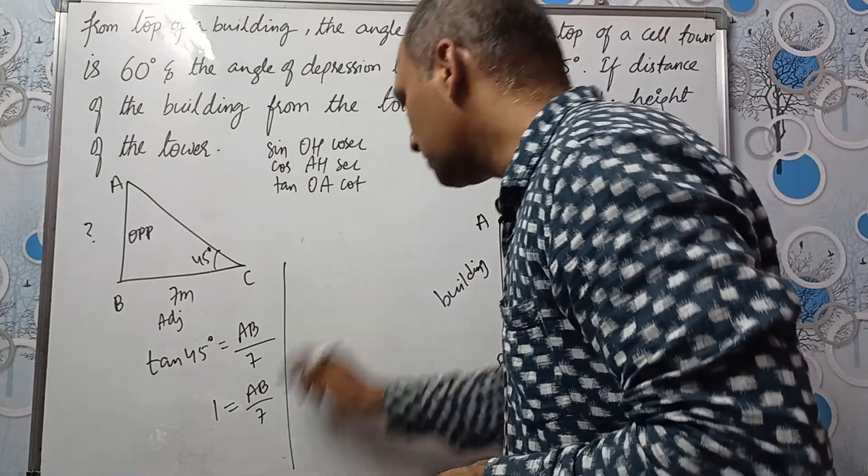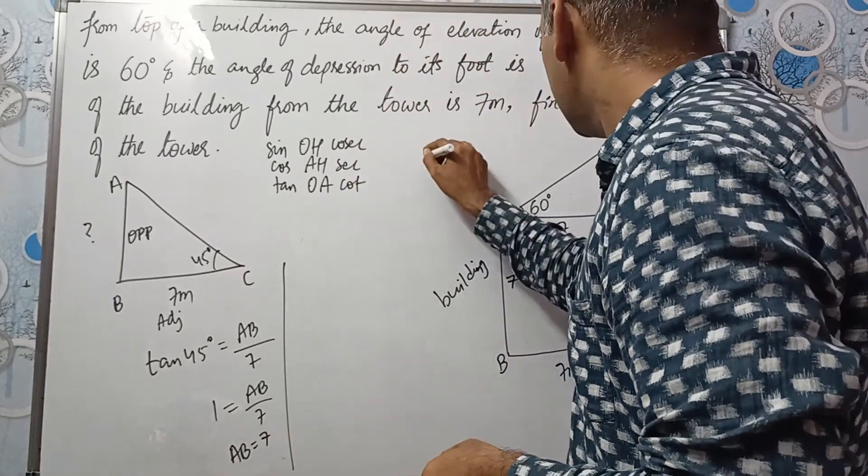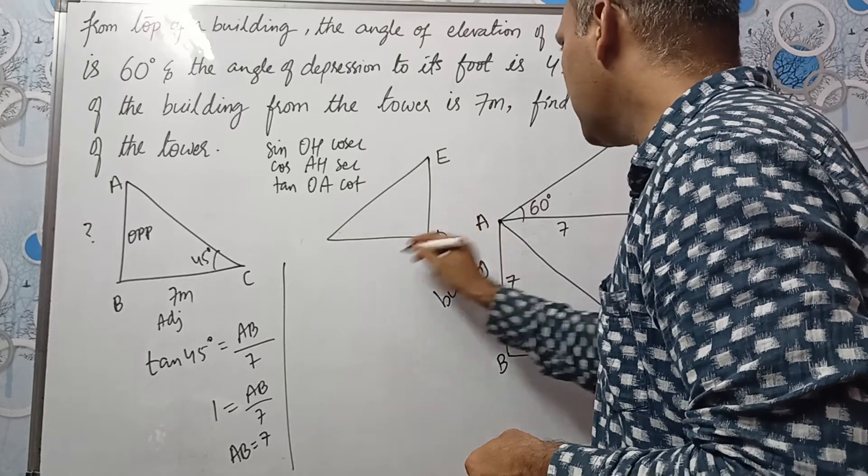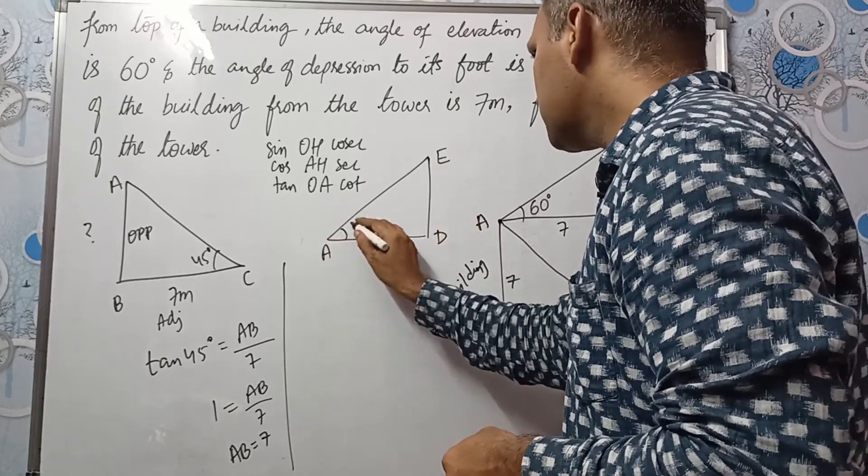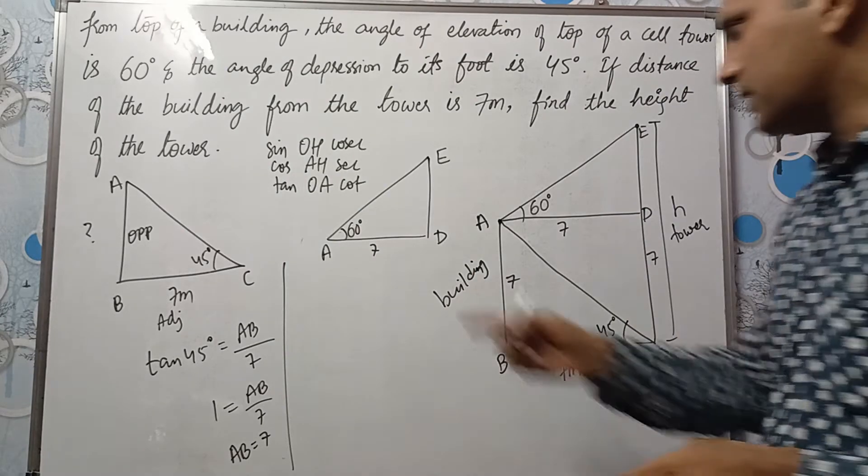Let me drop this. Let me write AB is equal to 7 here. Let us take this triangle E, D and this is A. This is 60 degrees. And this is 7.